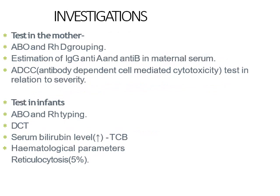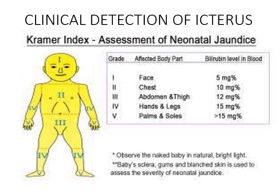For the mother, you want to do ABO and Rh grouping, estimate the amount of IgG against antigen A and antigen B, and do tests for antibody-dependent cellular cytotoxicity. For the infant, you want to do a direct Coombs test to detect ongoing hemolysis, reticulocyte count (reticulocytes are young fresh RBCs from the bone marrow compensating for anemia), and measure bilirubin — especially unconjugated bilirubin. Lactate dehydrogenase will also be elevated.